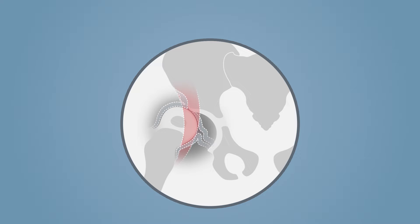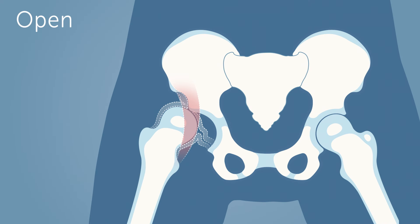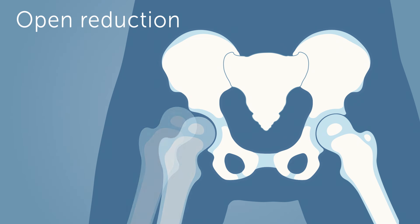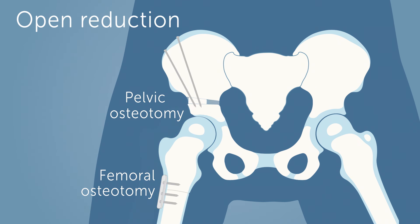If however, surrounding structures such as ligaments and tendons have developed in a way that blocked the femur from being moved back into place, then a surgery called an open reduction will be necessary in order to clear the path for the femur to return to its proper position. If any bony structures need to be adjusted as well, additional procedures called pelvic or femoral osteotomies, where bones are cut and rearranged to make for a more proper fitting hip joint, may also be performed during an open reduction surgery.